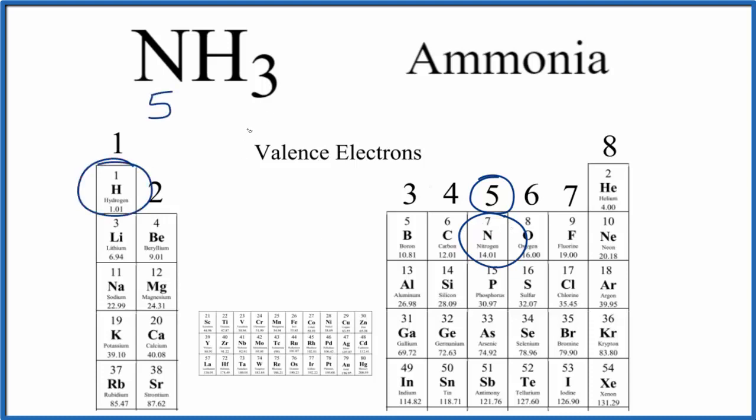Hydrogen in group one has one valence electron. So we have one valence electron, but we have three hydrogens, so we'll multiply this by three. So we have a total of eight valence electrons for NH3, ammonia.